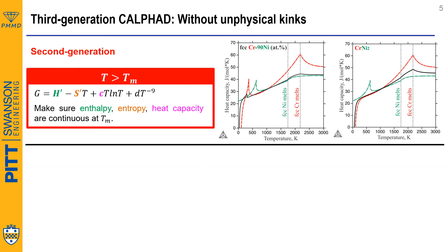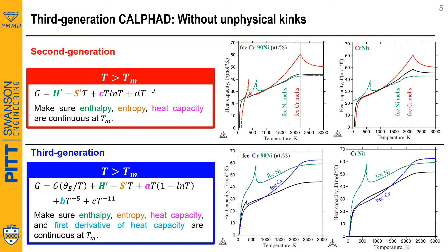Why do kinks exist at the melting point? It is because the second generation CALPHAD only enforces that entropy and heat capacity are the same below and above the melting point. So in the third generation, the first derivative of heat capacity is also forced to be equal below and above the melting point, which ensures that the curve is smooth over the whole temperature range.